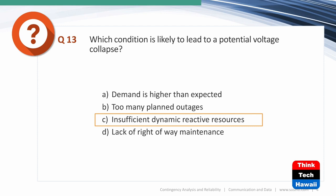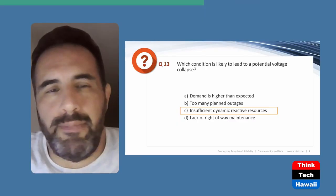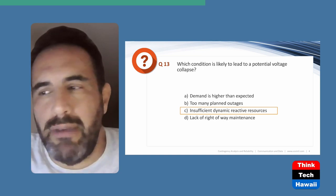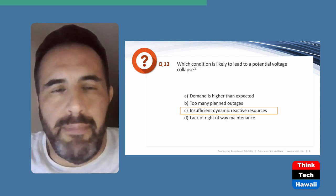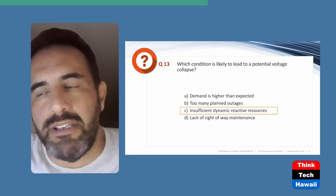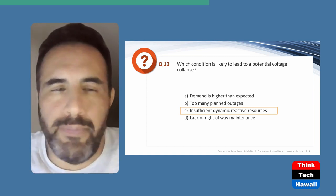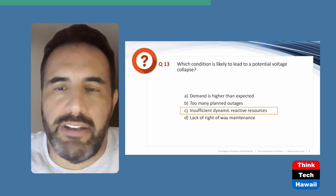Next question: Which condition is likely to lead to a potential voltage collapse? The answer is insufficient dynamic reactive resources. Let's talk about why the others are wrong. Demand higher than expected can be a component, but usually many more things have to go wrong for a voltage collapse. Too many planned outages could also contribute, but it's not the primary cause. Lack of right-of-way maintenance would more likely lead to a line fault, not a voltage collapse.